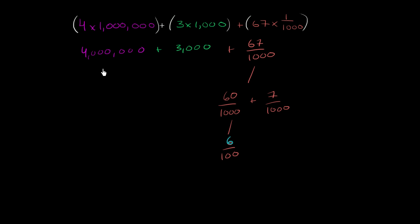Either way, let's add all of these things together. So we have 4 million. So the 4 in the millions place literally represents 4 million. Then we have no hundred thousands, no ten thousands. But then we have 3 thousands. So the 3 is in the thousands place. Let me put a comma here so we can keep track of things.